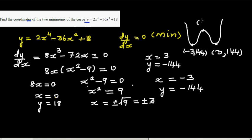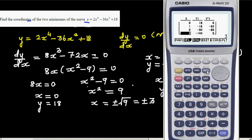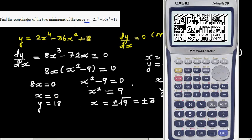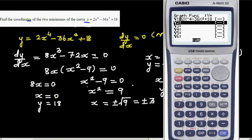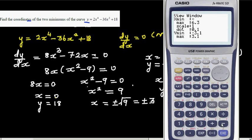So let's check this on a calculator. Go to graph, and we already have got the equation here. We have to adjust the scale because I have to go up to minus 144. So shift F3, I'll go from minus 5 to plus 5.